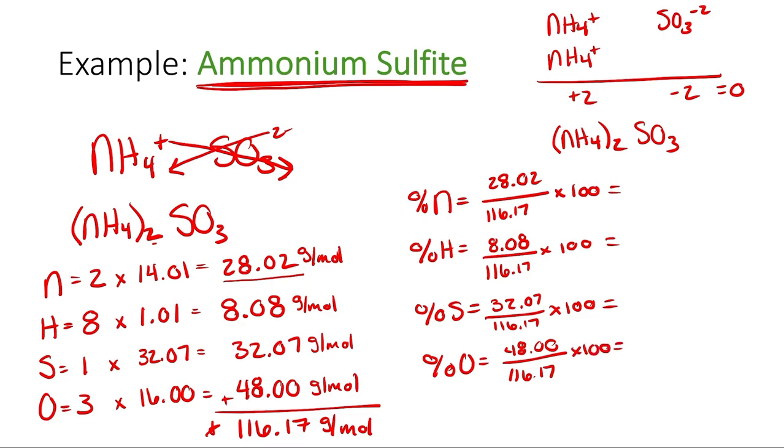If I do this in my calculator, times 100, then I end up with 24.01 for nitrogen. And then for hydrogen, 8.08 divided by 116.17 times 100, that's going to equal 6.96 percent.